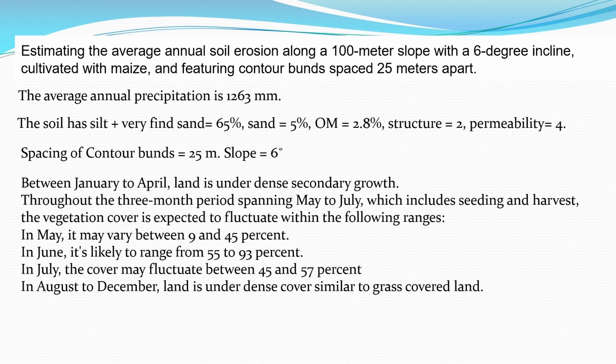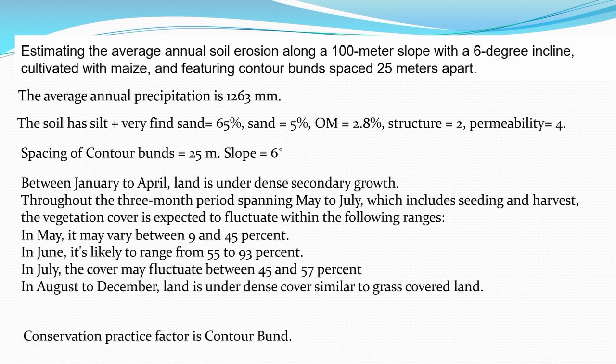Land cover conditions by period: January to April — dense secondary growth; May — vegetation cover 9 to 45 percent; June — 55 to 93 percent; July — 45 to 57 percent; August to December — dense cover similar to grass-covered land. Conservation practice is contour bunds. We will use the Universal Soil Loss Equation to compute the annual soil loss.